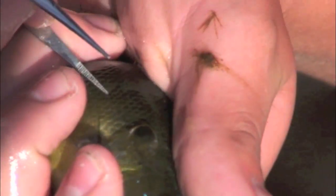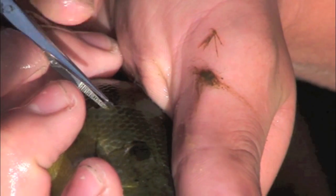Now use your tweezers to gently remove three to five scales from behind the pectoral fin on each fish.